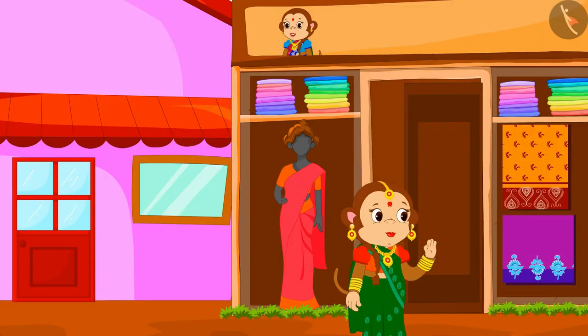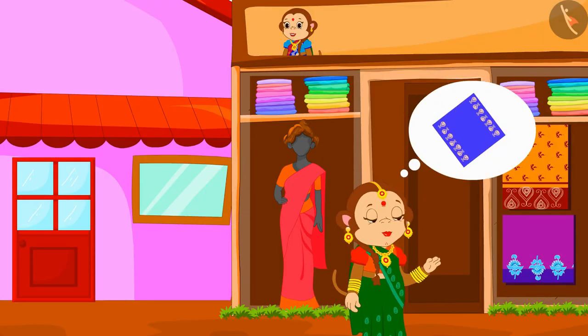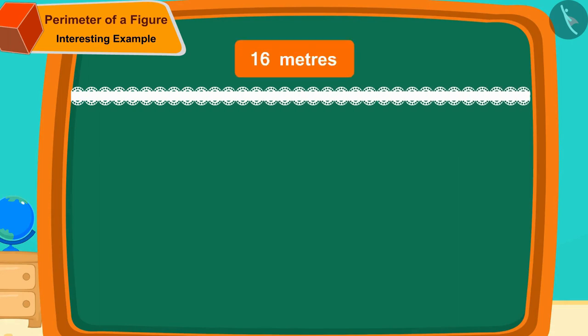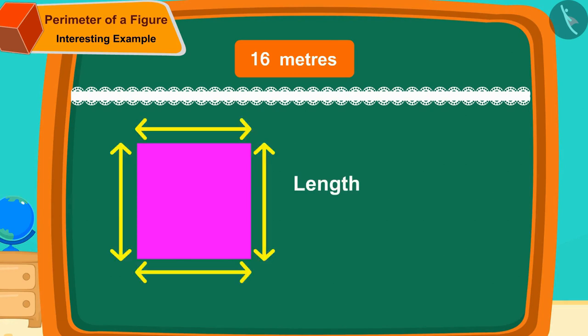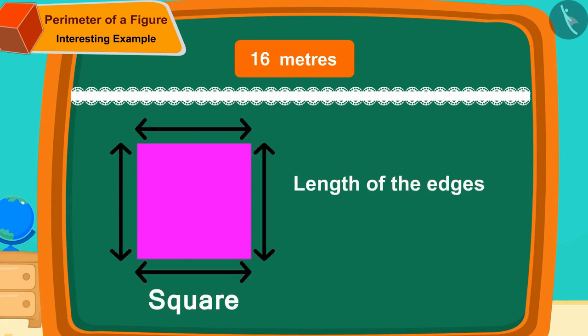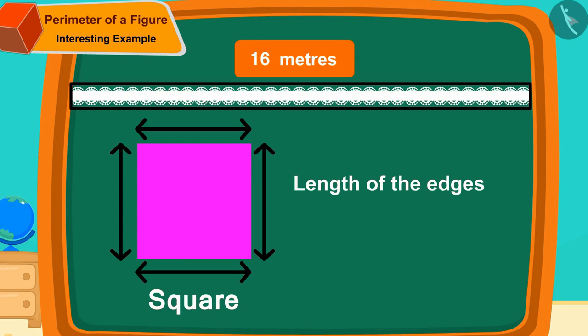Now, Banno has to sell tablecloth. If Banno has bought a 16 meter long lace, can you find the length of the edges of the square shape tablecloth that Banno can put it on? If you want, you can stop the video and find the answer.